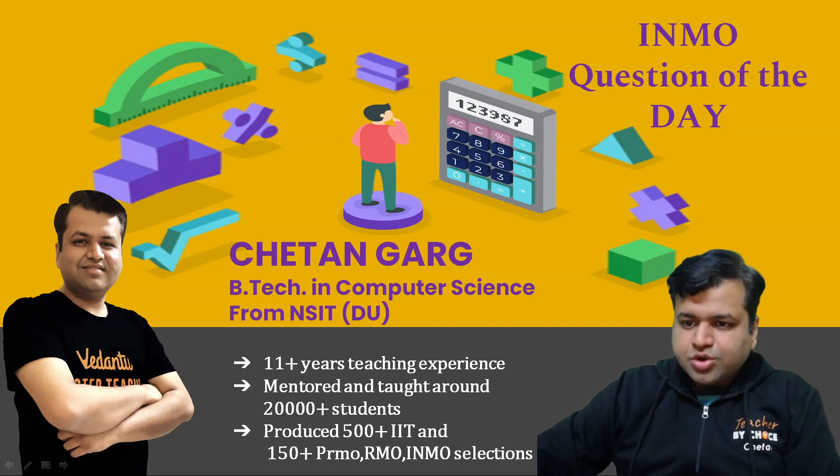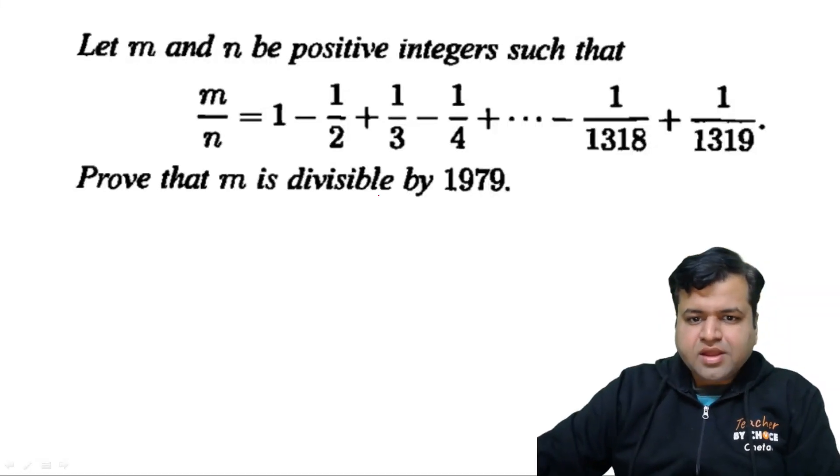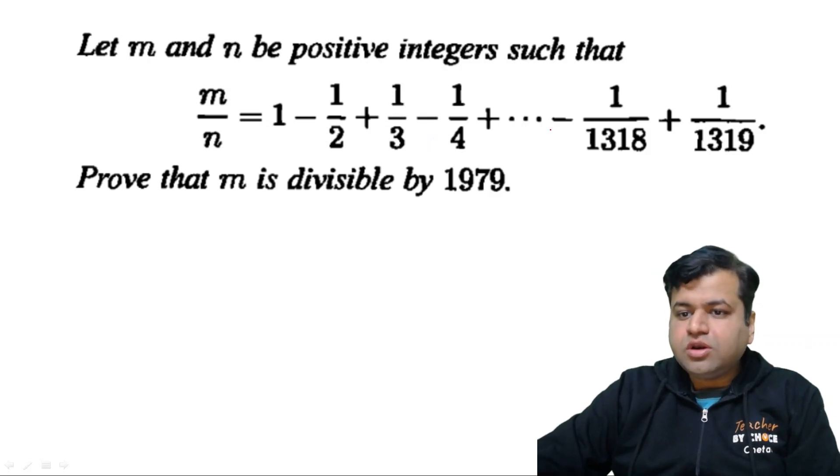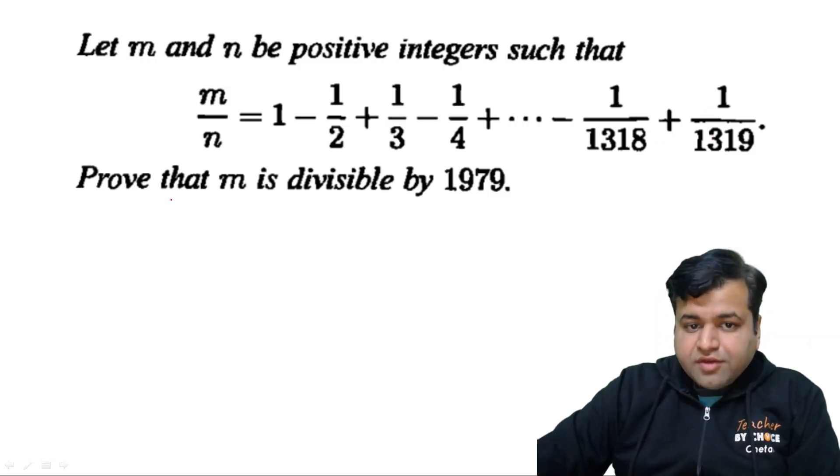So today's question is of INMO, previous year IMO question. So let's see the question. Let M and N are positive integers such that M upon N equals 1 minus half plus 1 by 3 minus 1 by 4 plus and so on till minus 1 by 1318 plus 1 by 1319. We need to prove that M, this M is divisible by 1979.